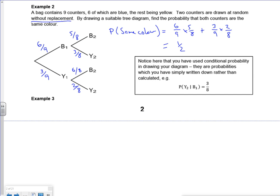We've actually used conditional probability. The probability that Y2 is selected given that B1 is selected is 3 over 8. That 3 over 8 has happened after the B1, it's linked to that B1 happening. So the second bit on your tree diagrams is conditional probability because something has happened first.